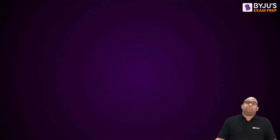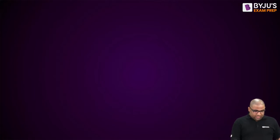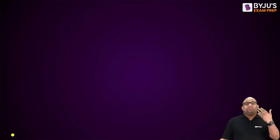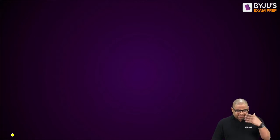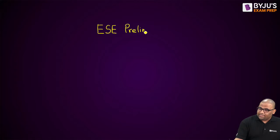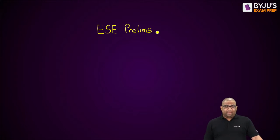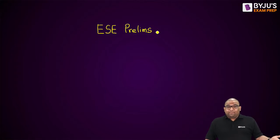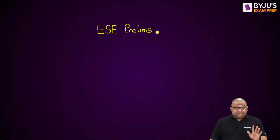Coming to the ESC pattern, let us have a small discussion about the ESC pattern and then we will go into the subject-wise weightage. Since this video is about prelims, we will confine our discussion to ESC prelims. In ESC prelims there are two papers: one belongs to the civil engineering or technical paper, and the next one is General Studies.